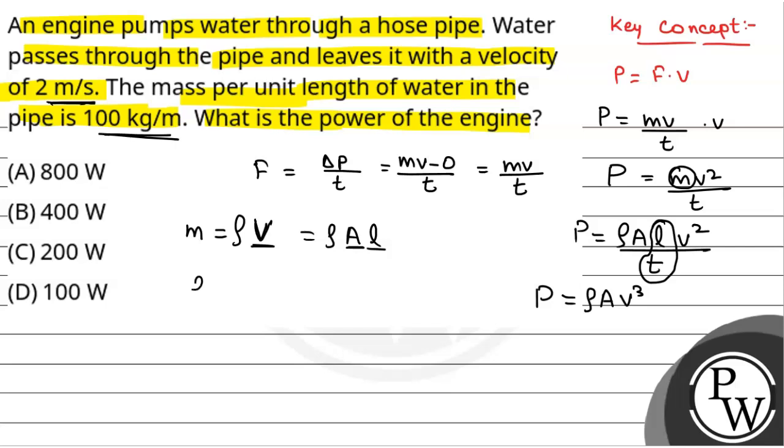Also, we have rho into A that is equal to mass per unit length. So, rho into A can be written as mass per unit length. That is equal to 100.